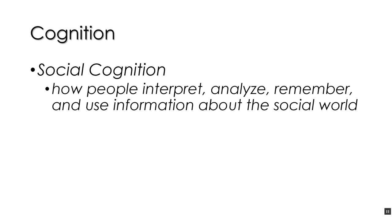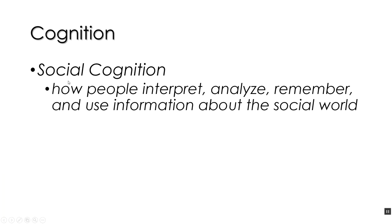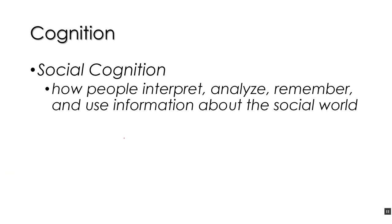Let's start with the basics. Social cognition is how people interpret, analyze, remember, and use information in the social world. We could just cross out 'social' and then we'd be talking about cognition that applies to anything — words, letters, numbers, peoples, cats, dogs. But when we put 'social' back, we're applying everything we know about cognition to the social world.